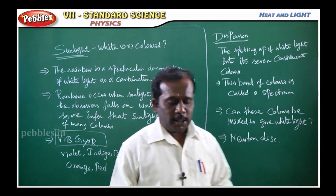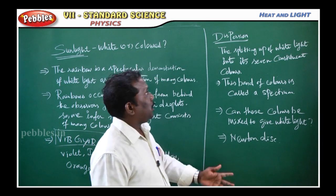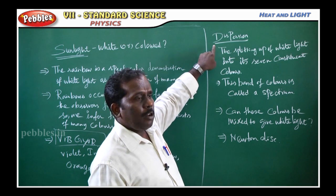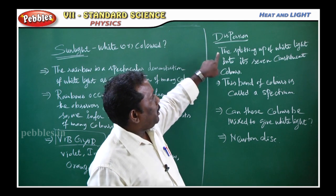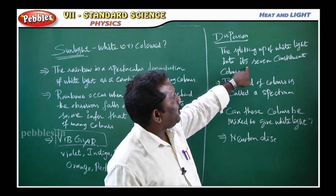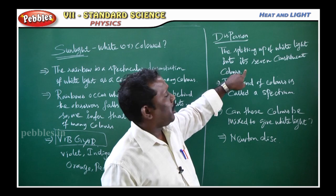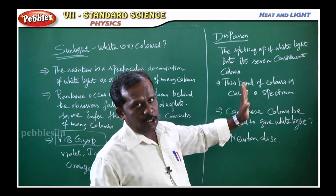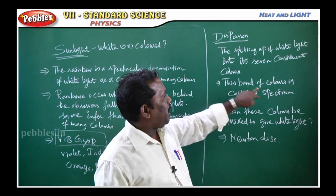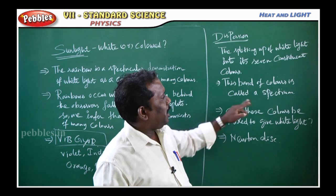That is the concept of dispersion. Dispersion is a two-mark definition: the splitting up of white light into its 7 constituent colors is called dispersion. The band of colors formed is called the spectrum.